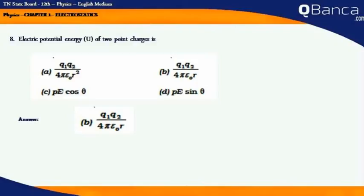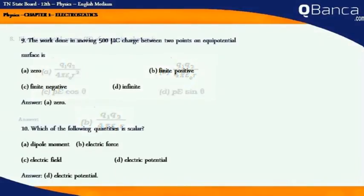Electric potential energy U of two point charges is. Answer: q1 q2 by 4 pi epsilon naught r. The work done in moving a 500 micro-coulomb charge between two points on an equipotential surface is. Answer: 0.